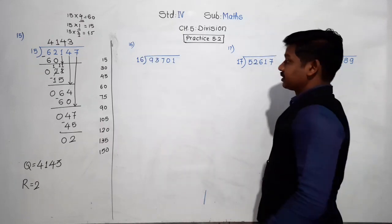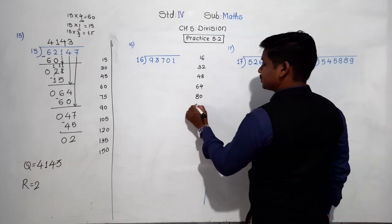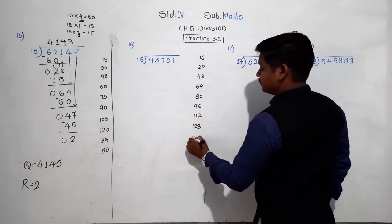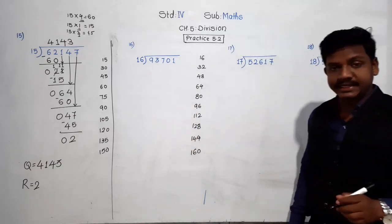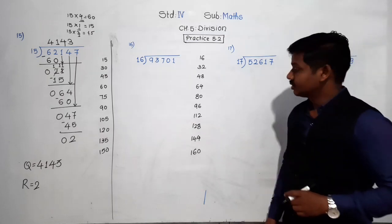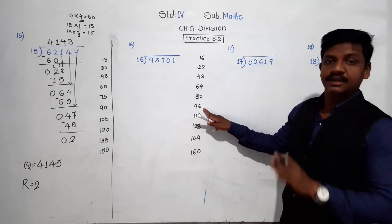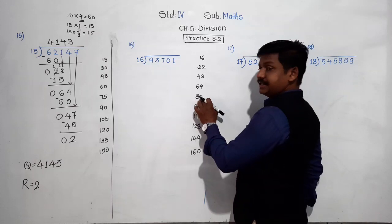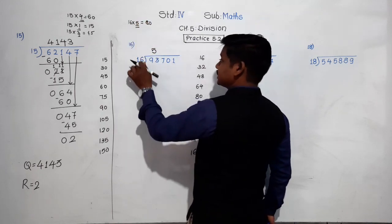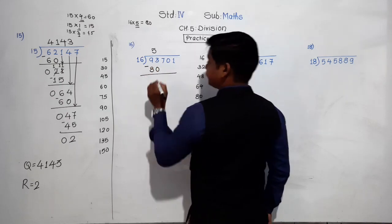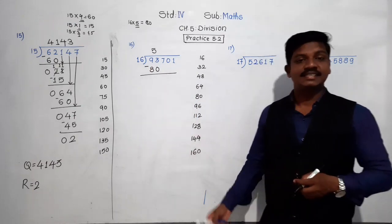Example 16: 93,701 divided by 16. Let us write the table of 16. Now first we divide the first two digits, that is 93. Is there 93 in the table of 16? No. The smaller number than 93 in the table of 16 — 96 is greater than 93, so don't take that. The smaller number than 93 is 80. So 16 fives are 80. So 5 goes in the quotient.